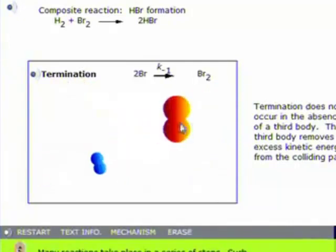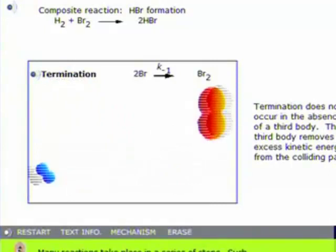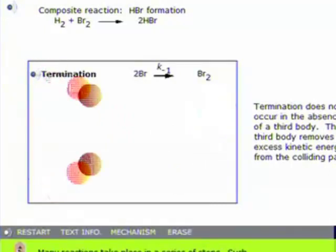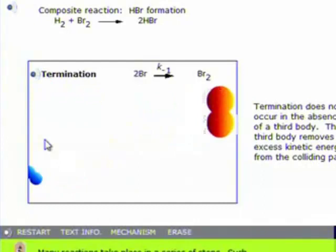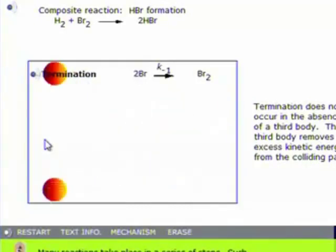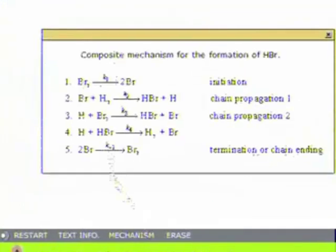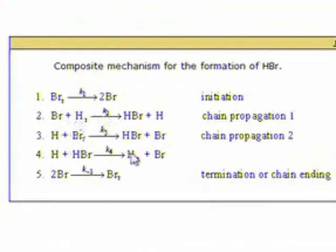So what this is - chain reactions are initiated, they propagate, but as the concentration of the products increases, the process can be inhibited and finally it can be terminated and you end up with an equilibrium. So the mechanism is all these different steps that go on.